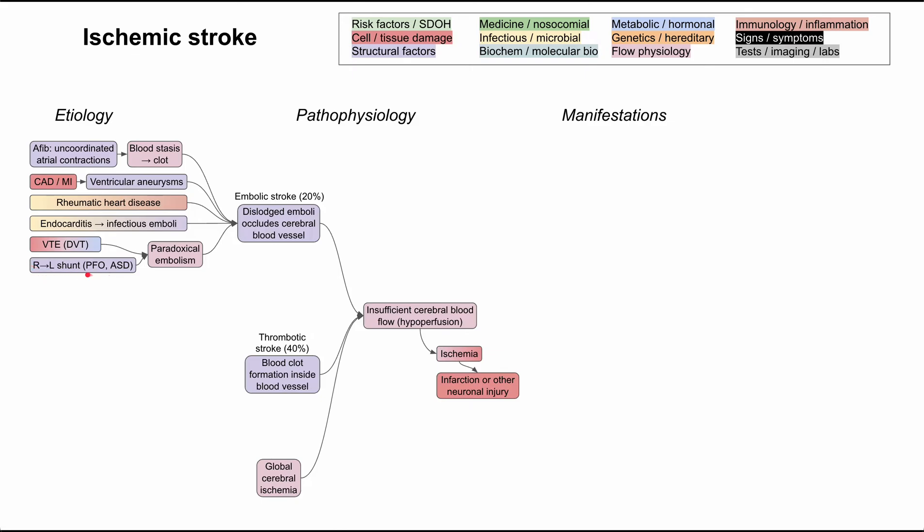Most commonly, this is a patent foramen ovale or an atrial septal defect. So if you have a clot in the veins and a way for that clot to get from the veins to the arteries, a right-to-left shunt, you can have a paradoxical embolism. And it's called paradoxical because you wouldn't normally expect a DVT to end up in the arteries to cause an embolic stroke. But in this case, it does because you've met both of these criteria.